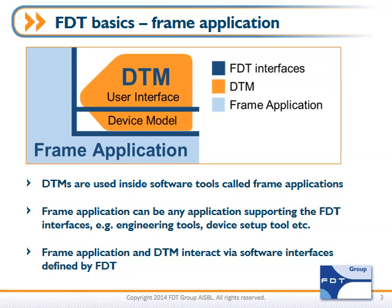The second part of the FDT standard is called the frame, or frame application. DTMs are used inside of a frame application to communicate with all the individual devices in the factory automation architecture. The frame application itself can be any type of application that supports the FDT interfaces, such as PLC engineering tools, basic device setup tools, HMI, and other types of applications. The frame application and the DTMs within it interact on software interfaces that are well defined in the FDT standard.